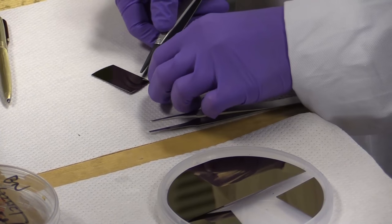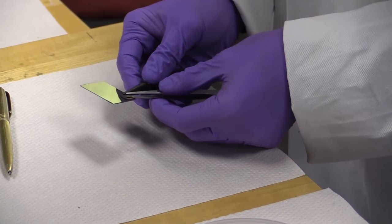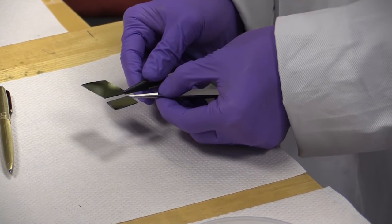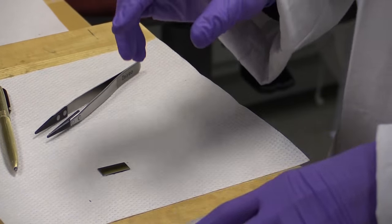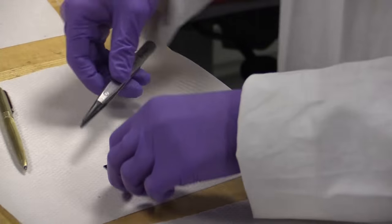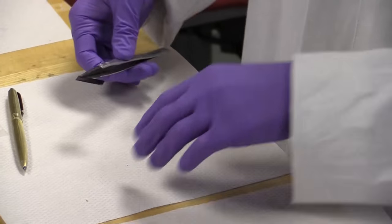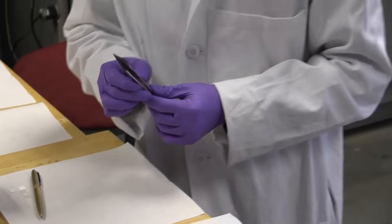There, I used a diamond scribe to just nick the side, and here, break it apart. Substrate cleanliness, we have found to be very important. So, we are just going to head over here and clean it with some IPA.